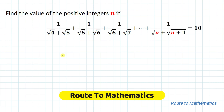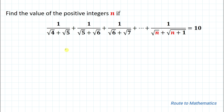Hello everyone, welcome to Root 2 Mathematics. In this video we are going to solve an interesting Olympiad question. The given question is: find the value of the positive integer n if 1/√4+√5 + 1/√5+√6 + 1/√6+√7 + ... up to 1/√n+√(n+1) equals 10. We are asked to find the value of n.